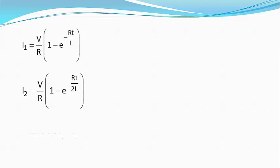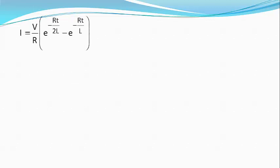Then the current I in the middle branch is given by I equals I1 minus I2, or I equals V divided by R, bracket starts, e raised to power minus RT divided by 2L minus e raised to power minus RT divided by L, bracket closed. This is equation number 1.